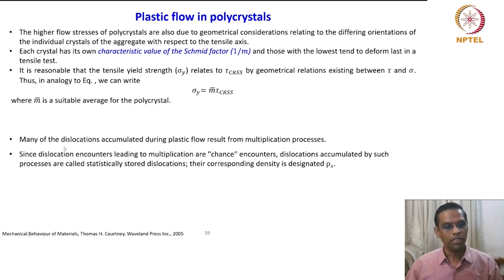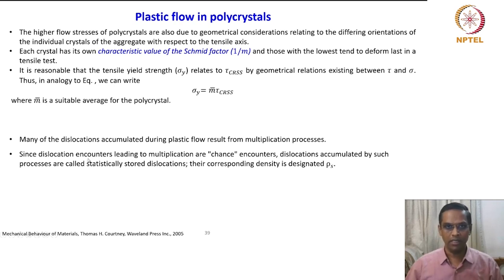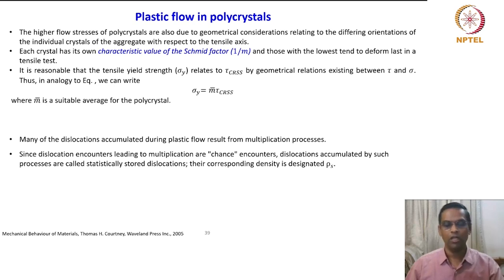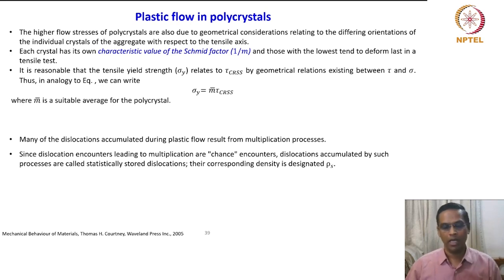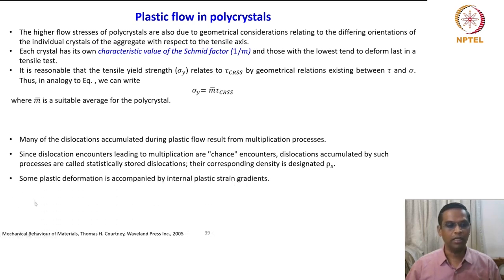Now we move on to the classification of dislocations. As deformation proceeds, the dislocation density multiplies, meaning the probability of dislocations interacting with other dislocations also increases. By chance, when dislocations meet other dislocations frequently because the dislocation density is high, multiplication also occurs by that process. That is why it is called statistically stored dislocation.